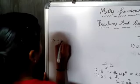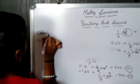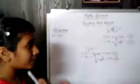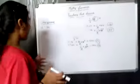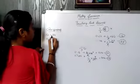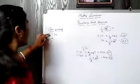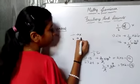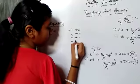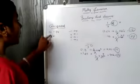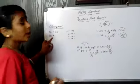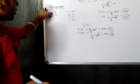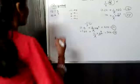Let us solve another problem: 12 divided by 3 upon 4. We need to understand what reciprocal means. When we can't divide some numbers, we take the reciprocal. When there is a division sign, it becomes multiplication; when there is multiplication, it becomes division. When there is plus, it becomes minus; when there is minus, it becomes plus. These are the reciprocals. Here there is a division sign, so I will take it as multiplication.